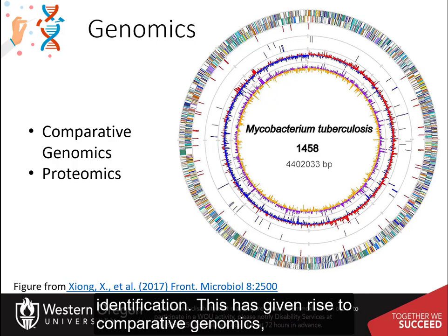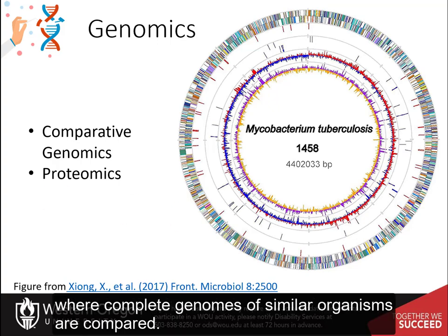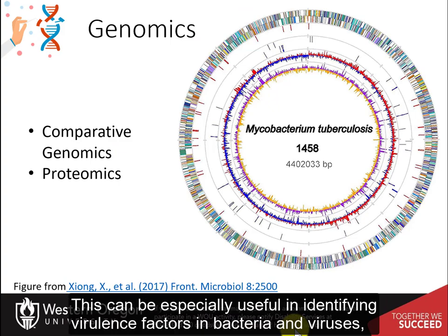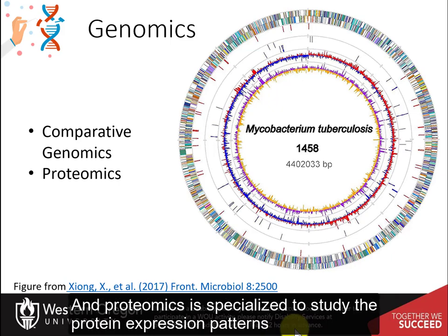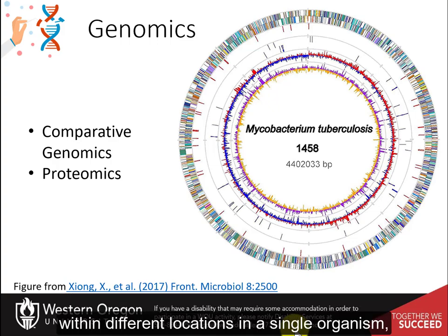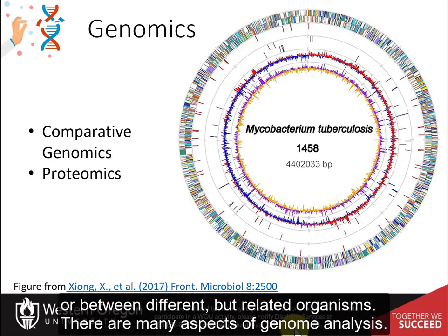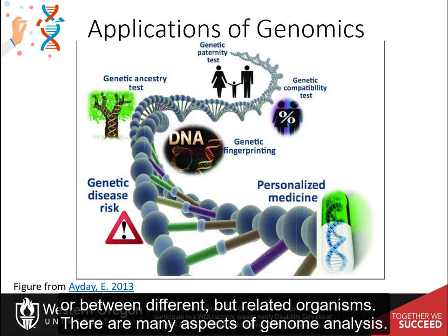This has given rise to comparative genomics, where complete genomes of similar organisms are compared. This can be especially useful in identifying virulence factors in bacteria and viruses, especially when one related strain shows high toxicity while another one does not. Proteomics is specialized to study the protein expression patterns within different locations in a single organism, or between different but related organisms.